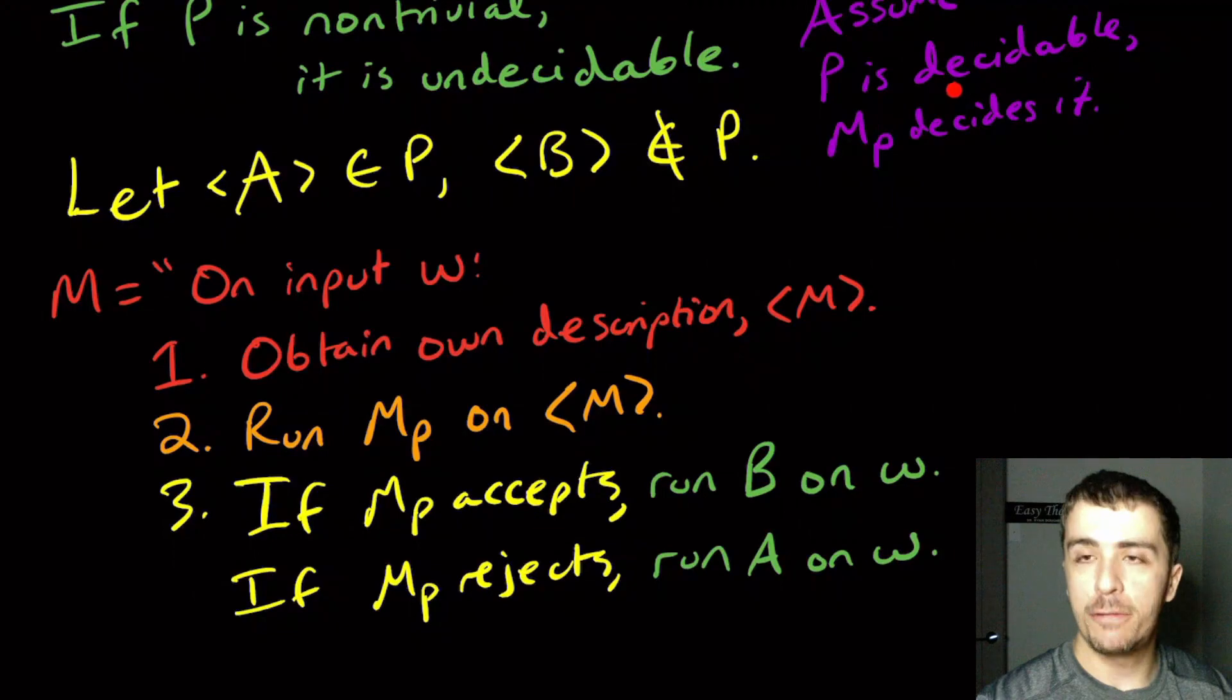Because if it were decidable, we can build this machine. All of these steps take a finite amount of time and we can get a logical contradiction because of that. It's a very quick proof to show that Rice's theorem is true.